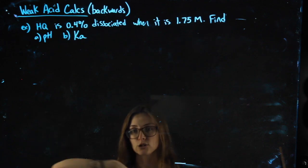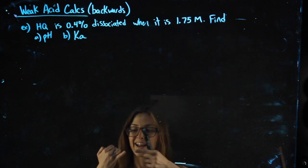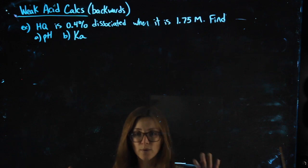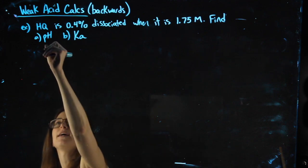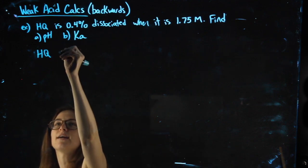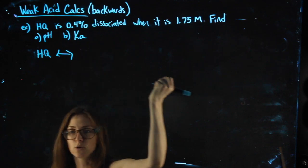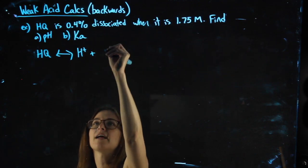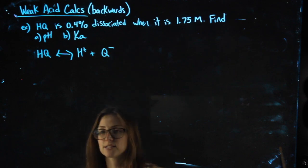Regardless of everything they give me, as soon as I know I have a weak acid, I can dissociate, ice chart, and write my KA expression. Always do that first. So taking HQ and dissociating it, it's weak, so I use equilibrium arrows, and H plus falls off. That leaves me with a Q minus on the other side.